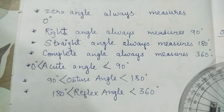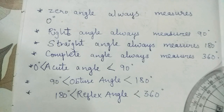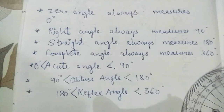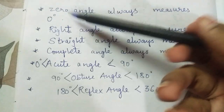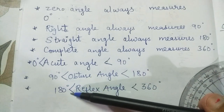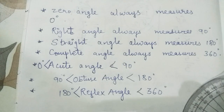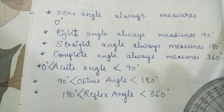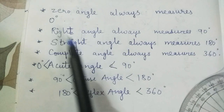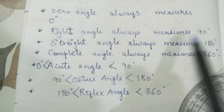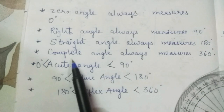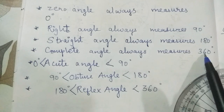Hello students, before starting Practice Set 2, I want you all to write these points in your notebook and then proceed with Practice Set 2. Either you can write these sentences beside the diagram which we have drawn in last session, or you can write after the diagram wherever space is there. It says: zero angle always measures 0 degree, right angle always measures 90 degree, straight angle always measures 180 degree, complete angle always measures 360 degree.